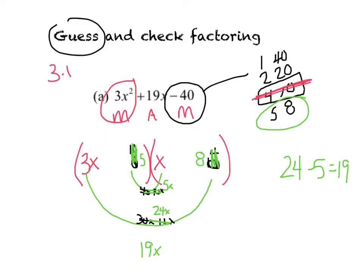Now I just have to watch the signs. If I'm multiplying to a negative 40, that tells me the signs are different. And I need to add to a positive 19. So do I want a positive 24 and a negative 5, or a negative 5 and a positive 24? Well I want the positive 24 and the negative 5. So I finally got my correct answers, I'm going to rewrite them so it's a little neater. My factors are 3x minus 5 and x plus 8.